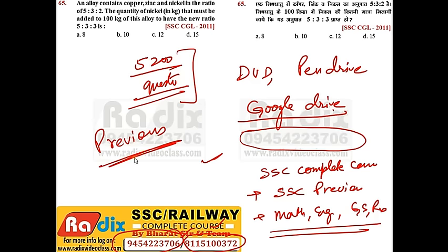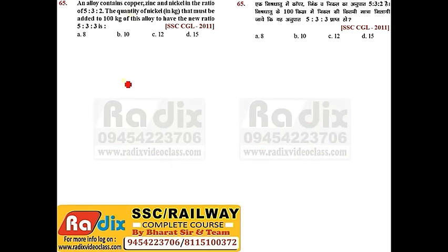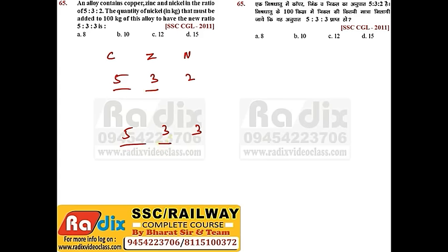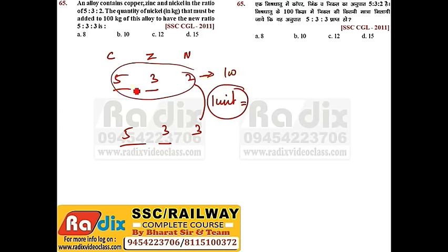Question 65. An alloy contains Copper, Zinc and Nickel in the ratio 5:3:2. Find the quantity of Nickel in kg that must be added to 100 kg of this alloy to have the new ratio 5:3:3. The copper and zinc ratios are the same; only nickel increases by 1 unit. Total initial is 10 units = 100 kg, so 1 unit = 10 kg. Nickel to be added is 10 kg. Answer is option B.